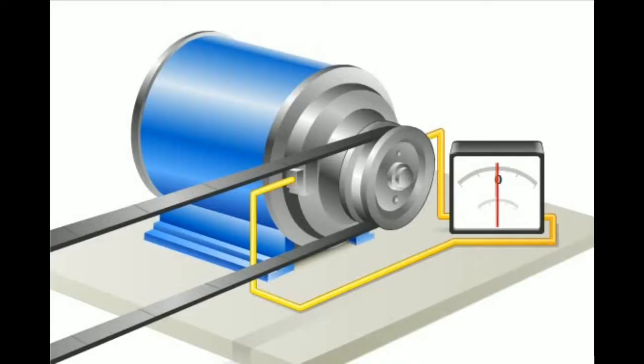An electric generator converts mechanical energy into electrical energy. An AC generator produces alternating current that keeps reversing its direction of flow.